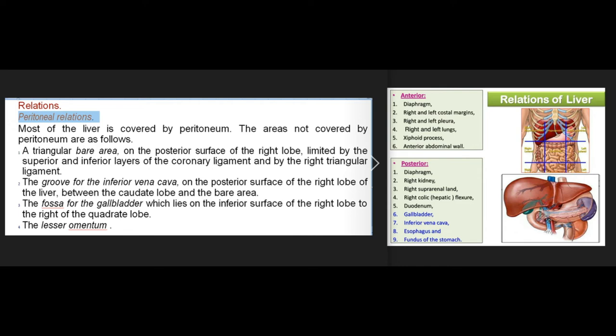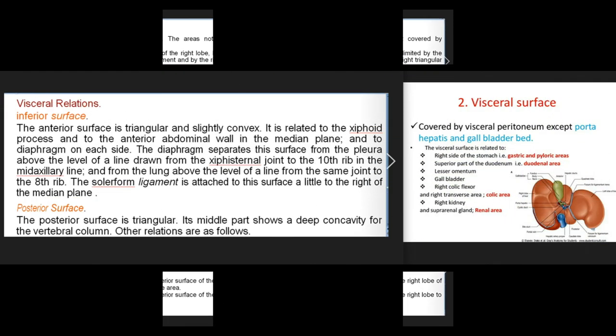Peritoneal relations: most of the liver is covered by peritoneum. Areas not covered include: a triangular bare area on the posterior surface of the right lobe, limited by the superior and inferior layers of the coronary ligament and the right triangular ligament; the groove for the inferior vena cava on the posterior surface of the right lobe between the caudate lobe and the bare area; and the fossa for the gallbladder on the inferior surface, to the right of the quadrate lobe.